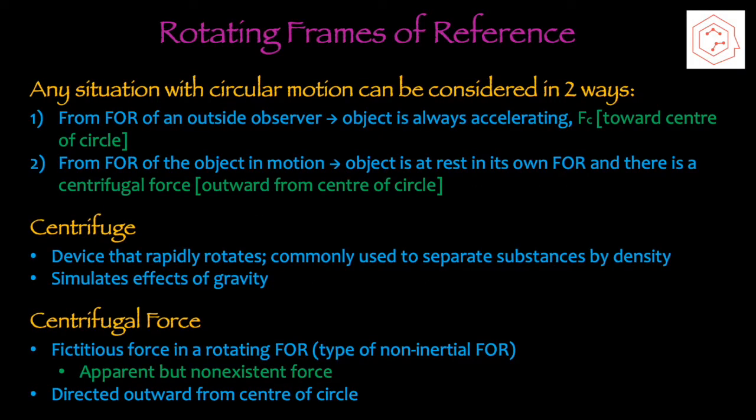Today we're going to be talking about rotating frames of reference. Any situation with circular motion can be considered in two ways: from the frame of reference of an outside observer, where the object is always accelerating with the centripetal force towards the center of the circle, or from the frame of reference of the object in motion, where that object is at rest in its own frame and there's a fictitious centrifugal force directed outward from the center.